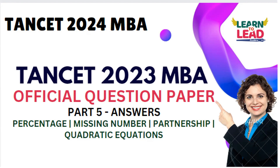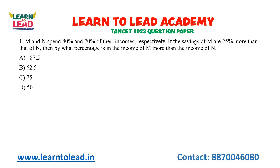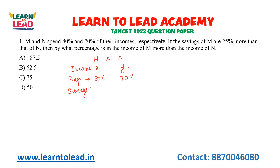The first question is: M and N spend 80% and 70% of their income respectively. Let us take M and N's incomes as X and Y. The basic formula is: income equals expenditure plus savings.